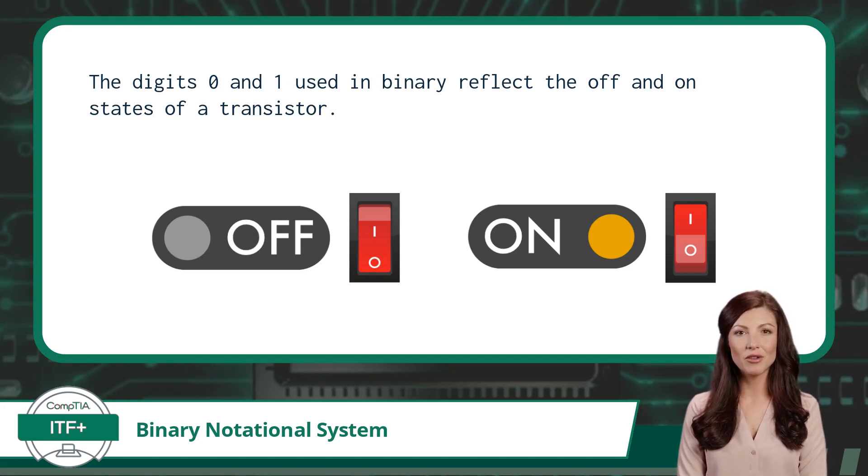Additionally, binary is great for computer programs to store values that can be of either two states. This would include yes or no questions, true or false values, and whether a box is checked or unchecked.